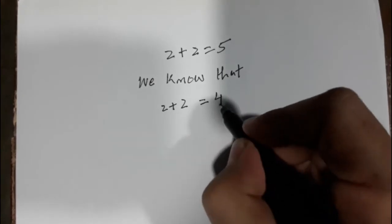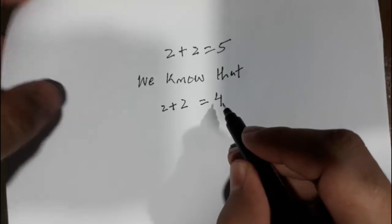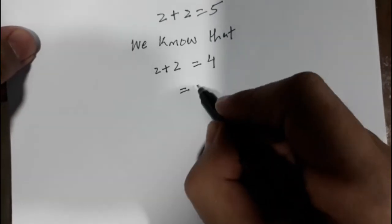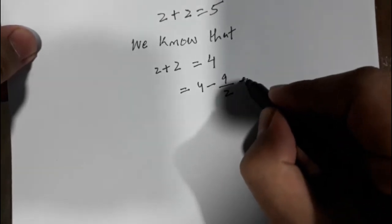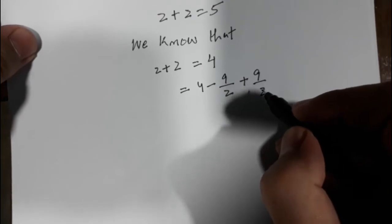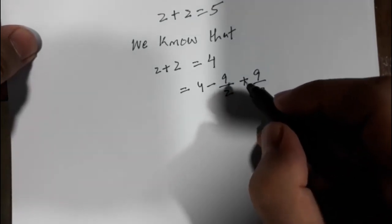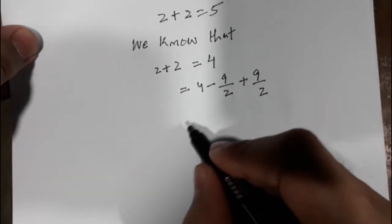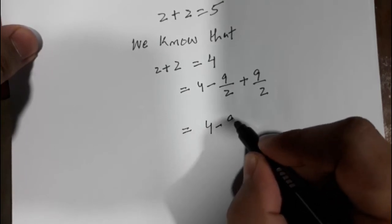So instead of this 4, we can write 4 minus 9 divided by 2, plus 9 divided by 2. If you cancel 9 divided by 2 and 9 divided by 2, it would be again 0, and this would be equal to 4 again. So equal to 4 minus 9 divided by 2.